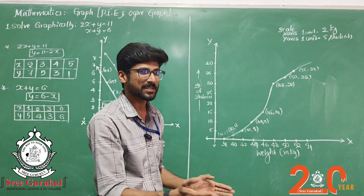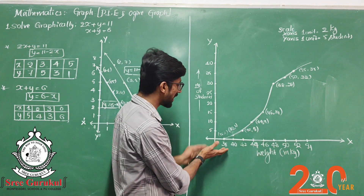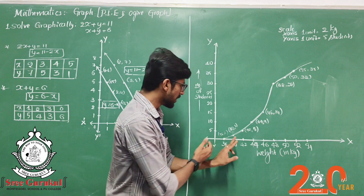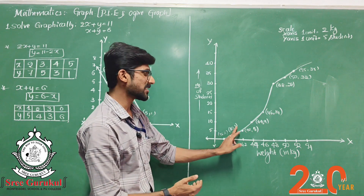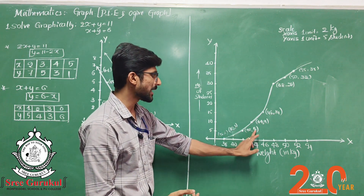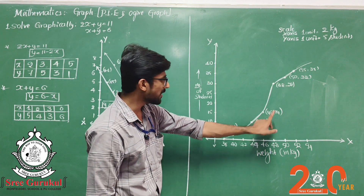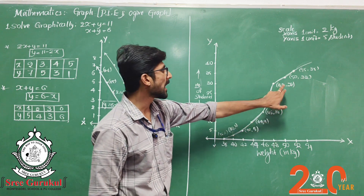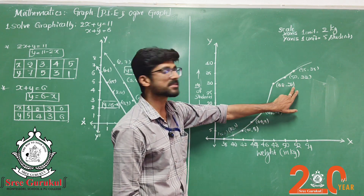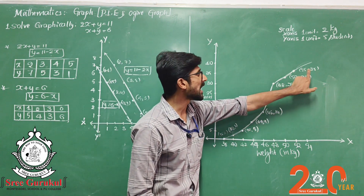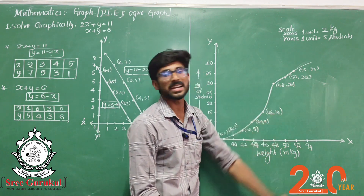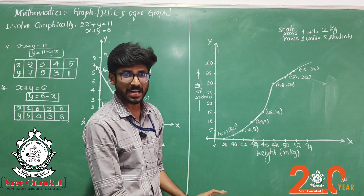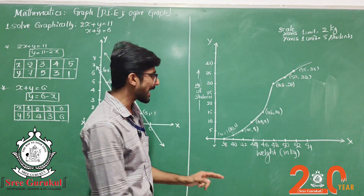For example, plot these coordinate points: (38, 5), (40, 3), (42, 5), (44, 9), (46, 14), (48, 28), (50, 32), (55, 35). This completes your ogive graph.